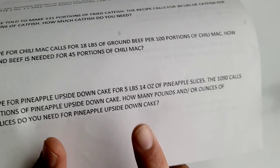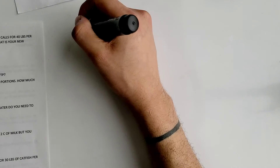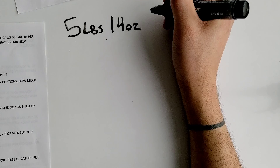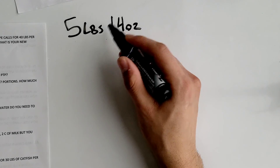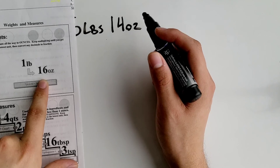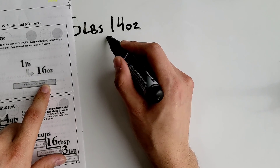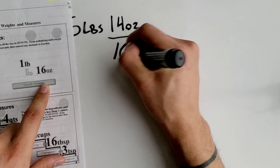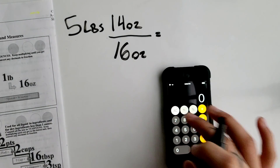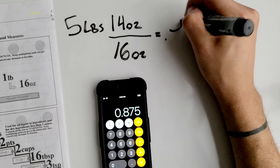First, we need to convert this mixed unit into a single unit. We have 5 pounds and 14 ounces, and we're trying to convert the ounces into pounds. Since we're going back up the unit scale, we have to divide. We divide 14 ounces by 16 ounces to convert to pounds. So 14 divided by 16 equals 0.88.